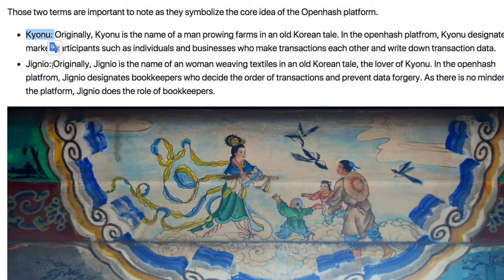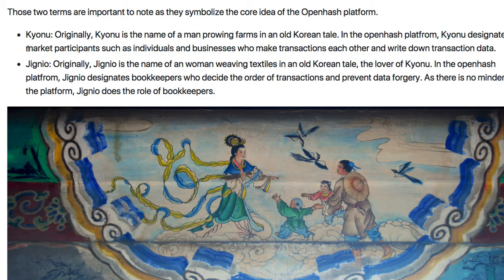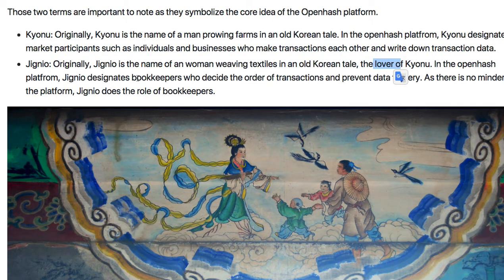Geonu is the name of a man with flowering palms in an old Korean tale. In OpenAsh platform, Geonu designates market participants — individuals, businesses, and Jingya. Jingya is the name of a woman weaving textile in the old Korean tale — the love of Geonu. In OpenAsh platform, Jingya is the bookkeeper, who weaves data. So Geonu produces data and Jingya weaves data.